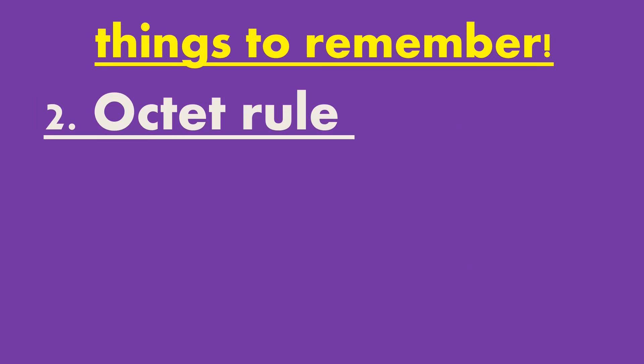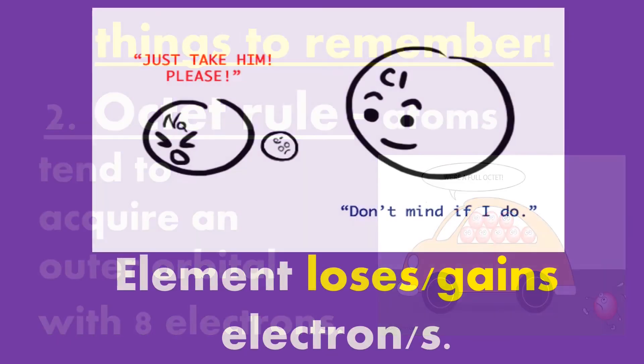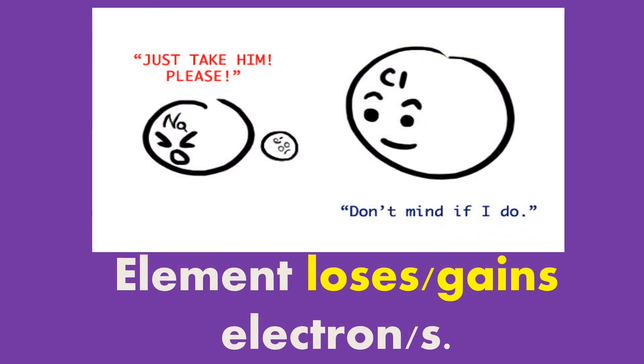Another thing to remember is the octet rule. The octet rule refers to the tendency of atoms to prefer to have 8 electrons in the valence shell. When atoms have fewer than 8 electrons, they tend to react and form more stable compounds. If an atom doesn't follow the octet rule, sometimes atoms gain or lose electrons.